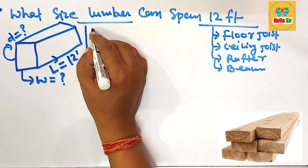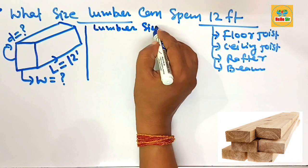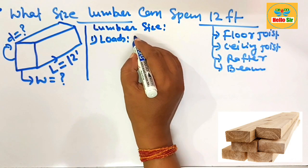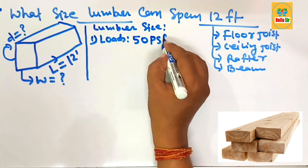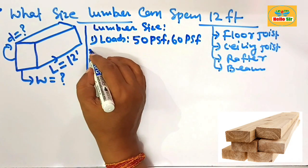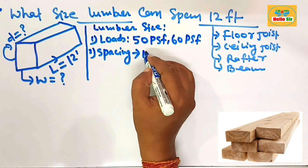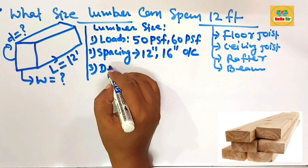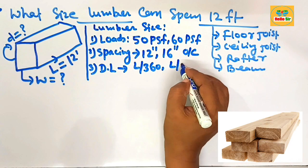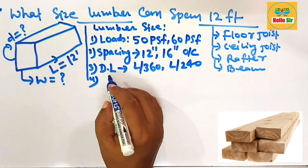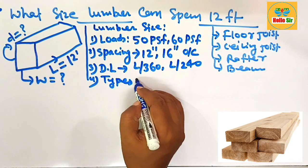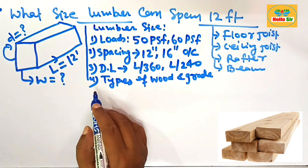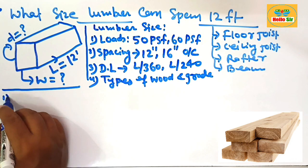The lumber size depends on many factors. First, it depends on the load condition — live load and dead load — which is about 50 to 60 pounds per square foot. Second, the center spacing between the joists, which should be 12 or 16 inches on center. Third, the deflection limit, which is L/360 or L/240. Fourth, the type of wood and its grade. These are the major factors that determine the required lumber size for a 12-foot span.